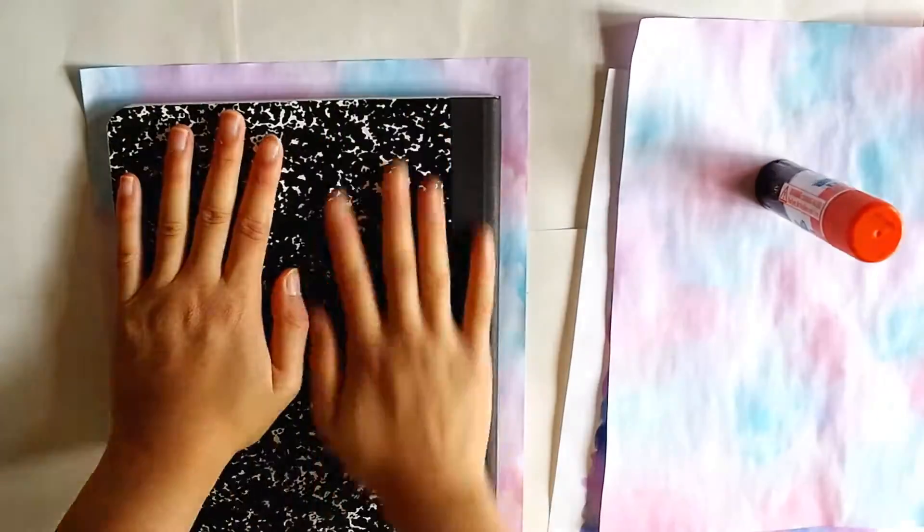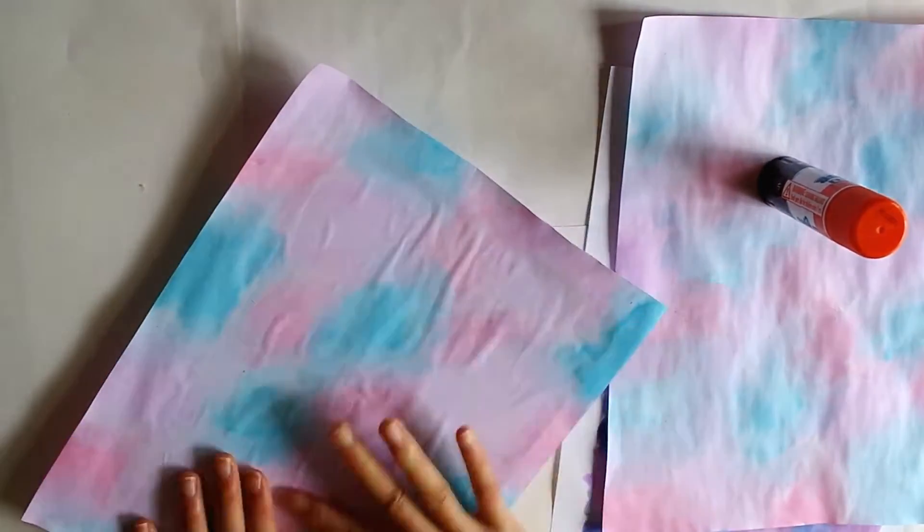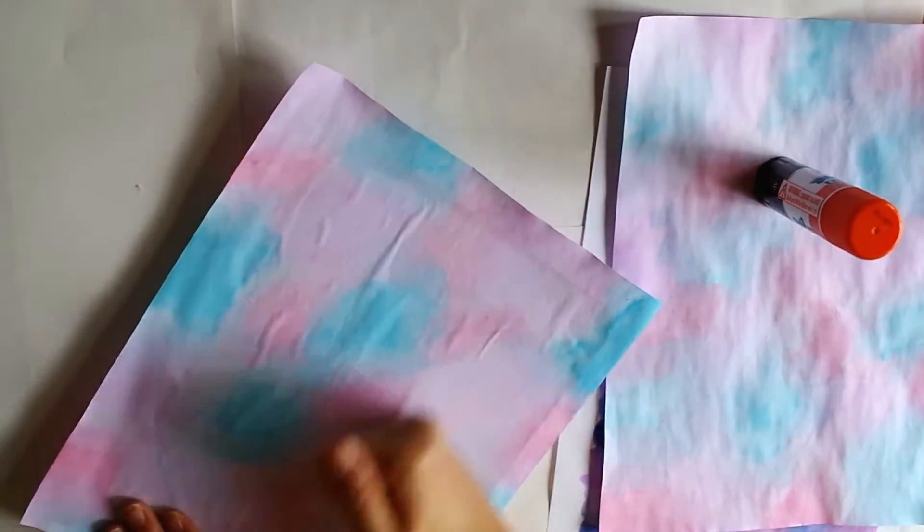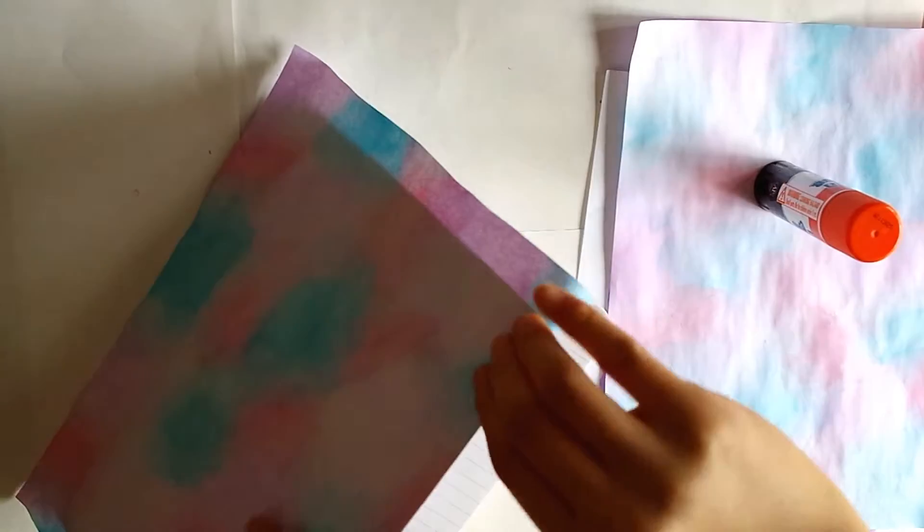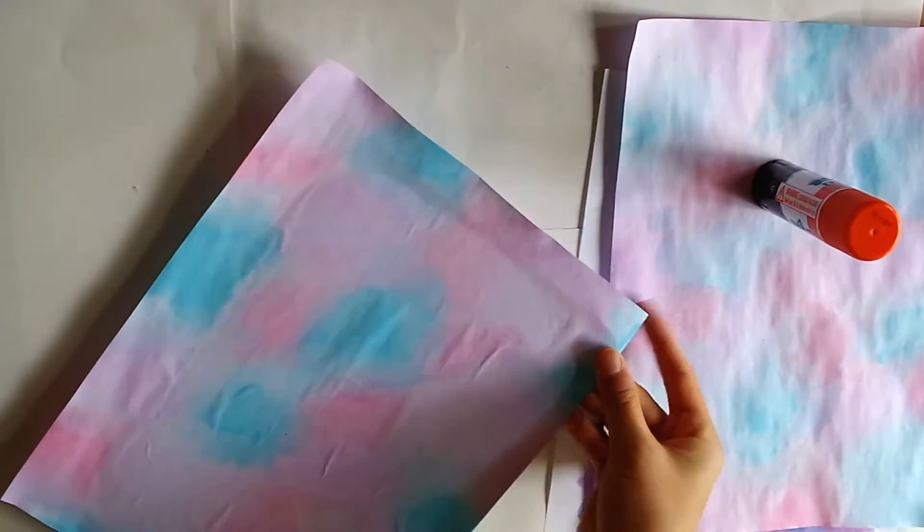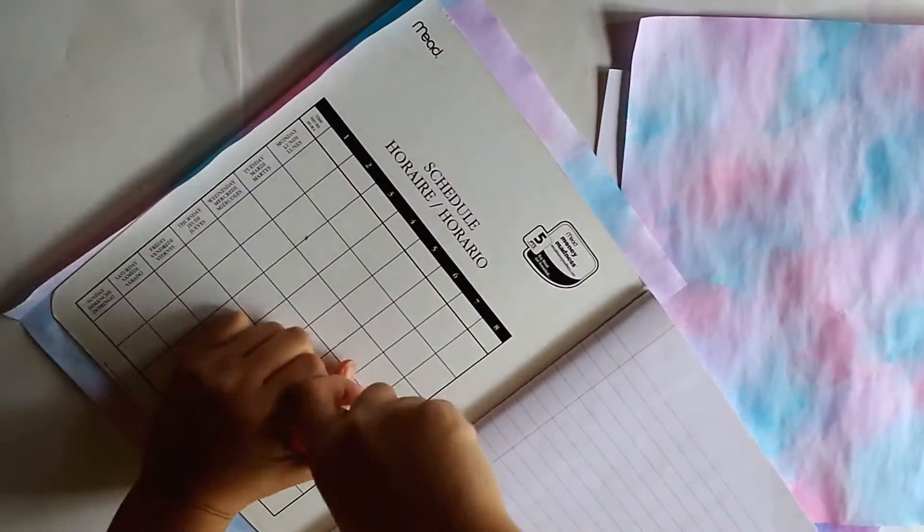Press the notebook down onto the paper. There will be wrinkles on the notebook cover but don't worry and try to smooth them out. I found that the best way to do this is to use your fist and push the pockets of air in one direction to flatten them. As you can see, there are now a lot less air pockets than there were before.